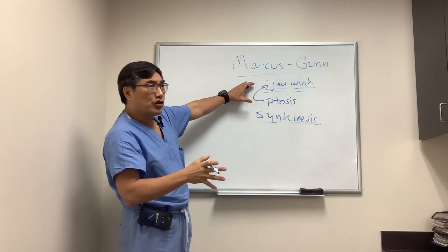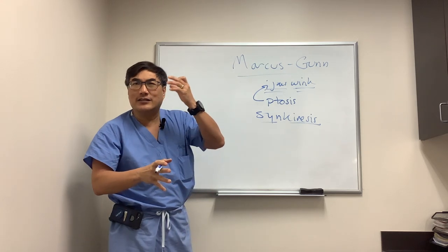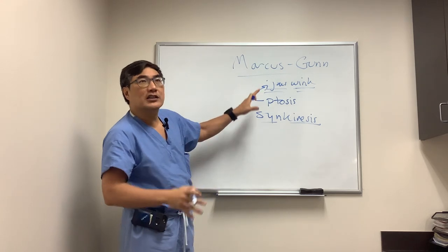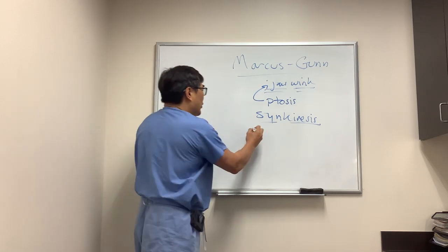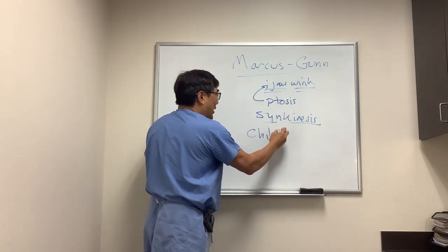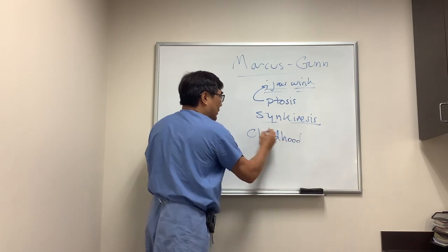So you move your jaw and your eyelid goes down. That's why it's called the Marcus Gunn jaw-winking phenomenon. It's a disorder usually discovered in childhood because they were born with the synkinetic movement.